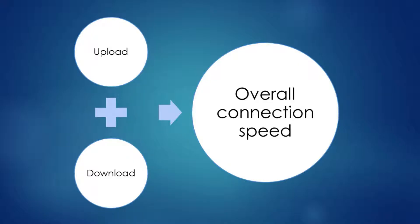The first thing to understand about internet connections is that they're made up of an upload speed and a download speed. Upload speeds come into play when you're uploading data such as sending an email, uploading something to YouTube, or putting information into your accounting package that's in the cloud. Download speeds come into play when you're downloading data — when you're watching a YouTube video, downloading an email, or reading something on a website.